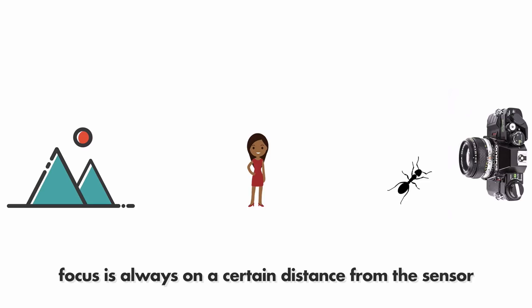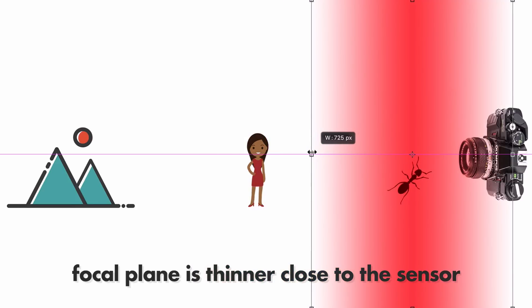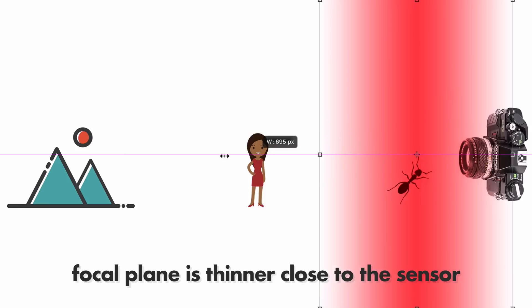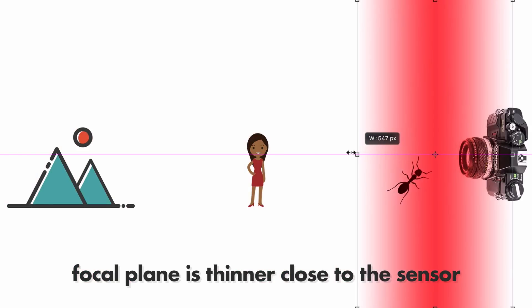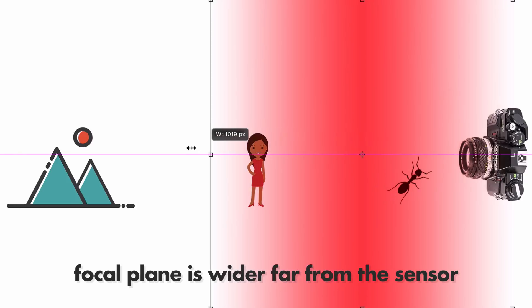Another great thing about the gradient analogy is that I can resize it, and this is actually how I view the focal plane - from my experience taking tens of thousands of photos. When you focus really closely, as in macro photography, the plane of focus is a lot thinner than if you focus far away. This is why it's so easy to get a blurry background when you focus really closely - why it's so popular to take a photo of a cup of coffee and get a nice bokeh.